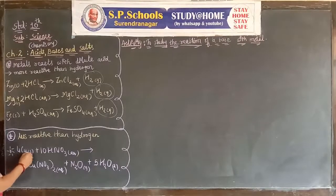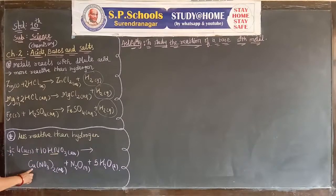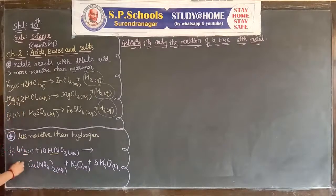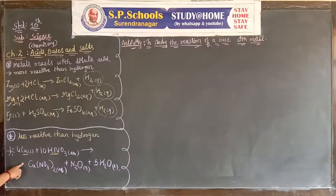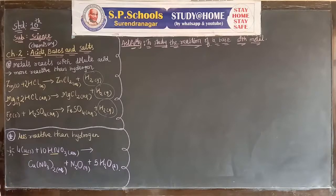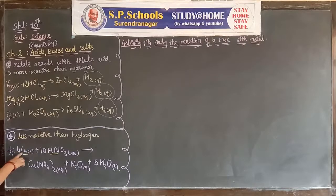For example, copper reacts with HNO₃ and gives the products copper nitrate, NO₂ nitrogen oxide, and water. Here we put 4 to balance Cu and we put 10 before HNO₃ to balance the equation. Notice that Cu is less reactive than hydrogen, so it cannot liberate hydrogen gas.